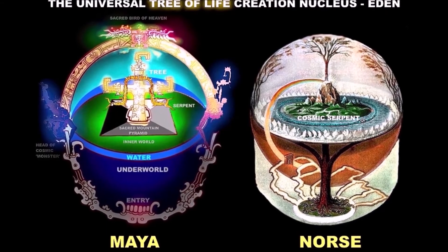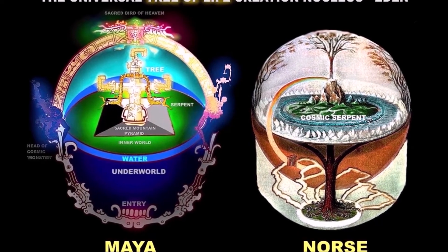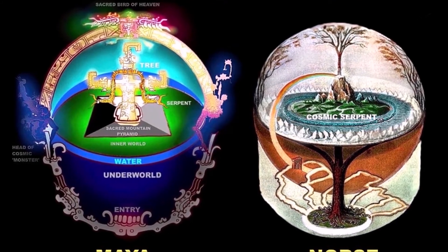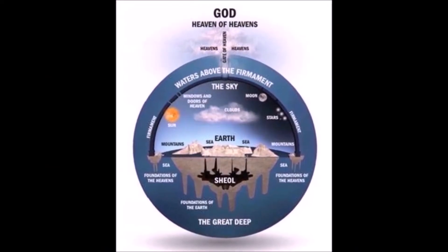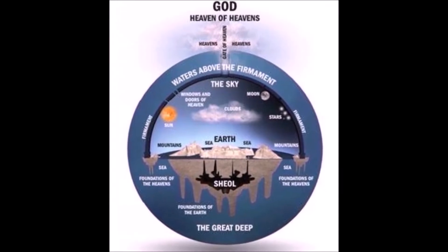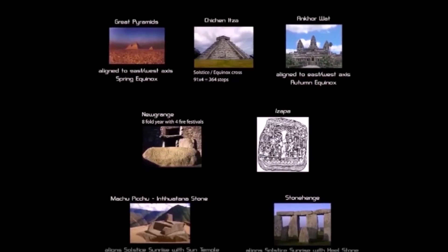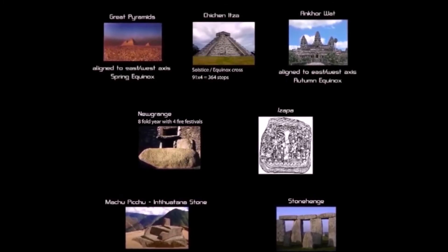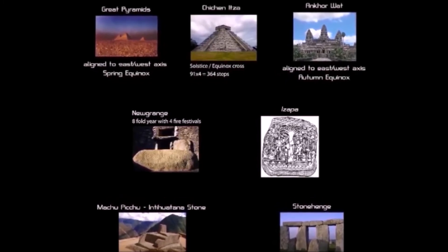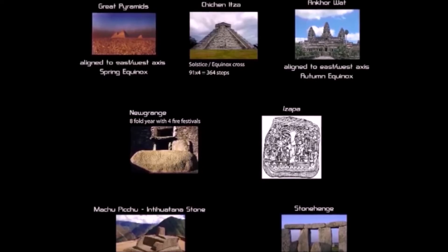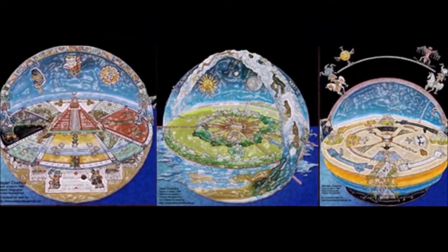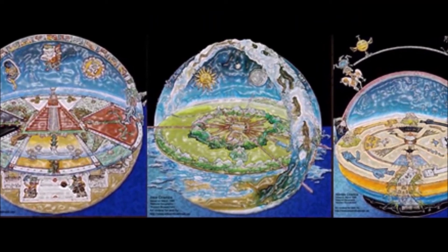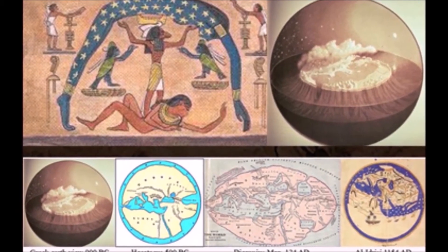As evidenced by the scriptures and the megaliths that still stand, all ancient civilizations agree that the Earth is flat and that the skies along with the bottom are circular. Adding even more credibility to this is the fact that many megalithic structures are perfectly aligned with the movement of the luminaries — a clear agreement that all these civilizations show the Earth as flat with circular skies.